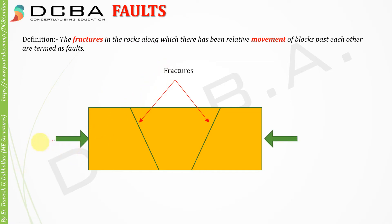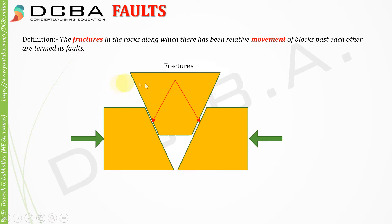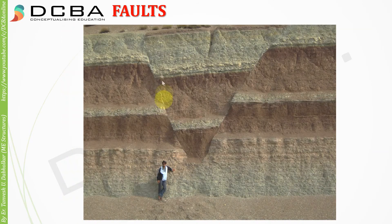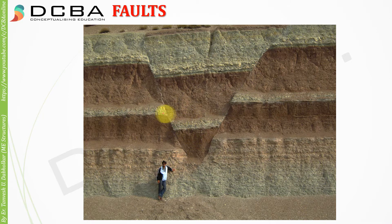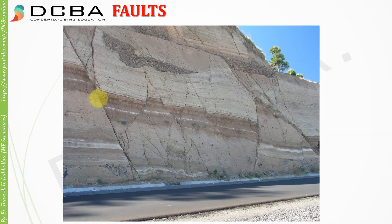It can also happen that there is a thrust coming from the sideways, because of which the middle portion rises upwards, as opposed to the previous animation where the middle one was sinking down. If we have a side thrust, the middle block will rise up. You can see in this image how well-defined this fault is — these are sedimentary bedding layers, and you can see that this rock has been displaced downwards.